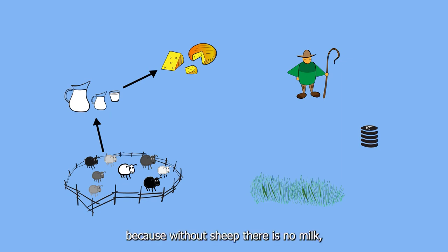Because without sheep there is no milk, and without milk there is no cheese. Using a scale between 0 and 1, we can estimate a value of 0.8 for the relationship between the number of sheep and the amount of milk and cheese available.